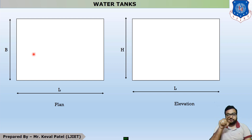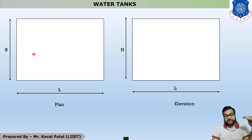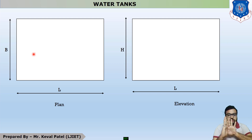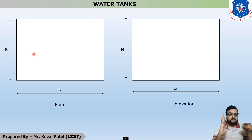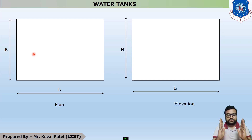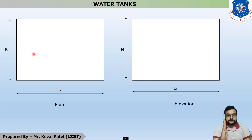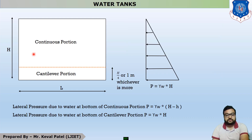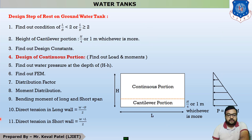When water waves act in the L direction, pressure acts on the short walls (B walls). Half the load acts on each of the two short walls. So the direct tension in the long wall equals W × B/2.